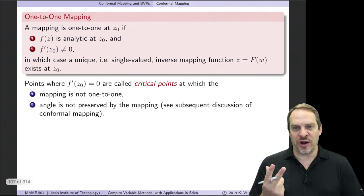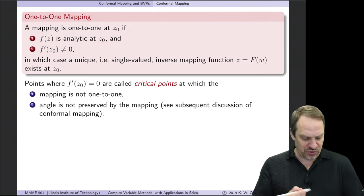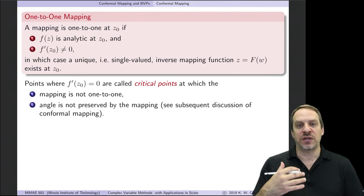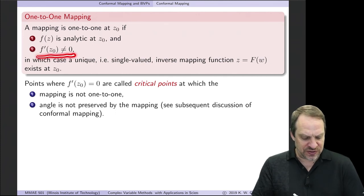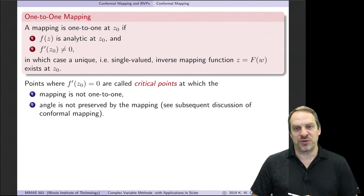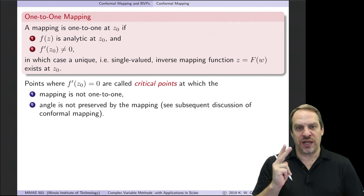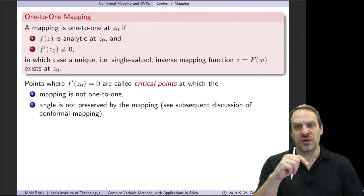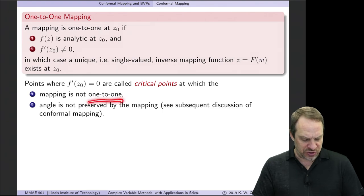This leads us to the two requirements for a mapping to be one-to-one. First, at a particular point z₀, f of z must be analytic — this is needed so that the Cauchy-Riemann equations apply. Second, f′(z) at that point must be non-zero. If both conditions are satisfied — analyticity and f′(z) ≠ 0 — then the mapping is one-to-one at that point. Points where f′(z) = 0 are called critical points, and the mapping is not one-to-one at such critical points.